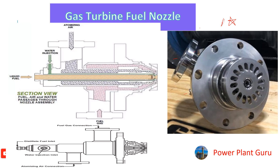Starting with the last small entry, which is the liquid fuel entry. Here also is a liquid fuel entry. In this cross-section diagram we can see the liquid fuel travel path, where we have the liquid fuel nozzle.